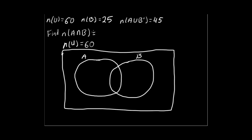What we're going to do is use shading. We already know there's 25 elements in B. So I'm going to go ahead and shade B with this blue.